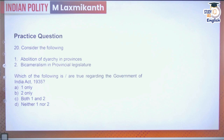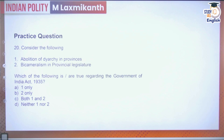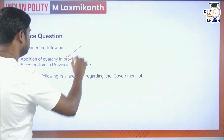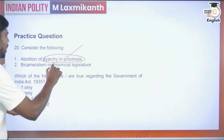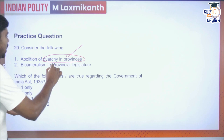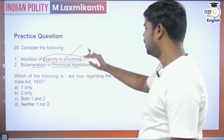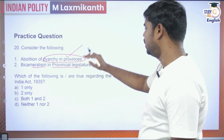Question 20: Which of the following are true regarding the Government of India Act 1935? Statement 1 — abolition of diarchy in provinces, recommended by the Simon Commission — true. Statement 2 — bicameralism in the provincial legislature — also true. Important distinction: bicameralism in the central legislature was introduced by GoI Act 1919, while bicameralism in provincial legislatures was introduced by GoI Act 1935. Both statements are correct. Answer: both 1 and 2.